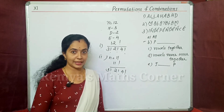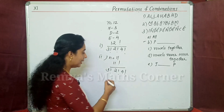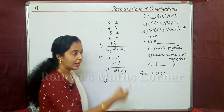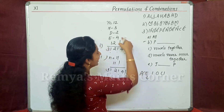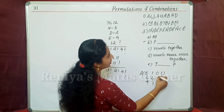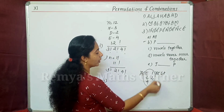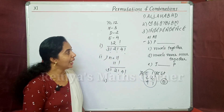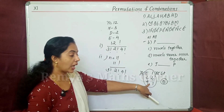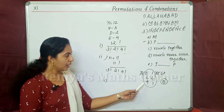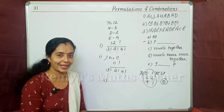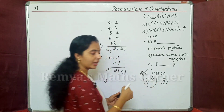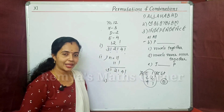Now, vowels together. We have to identify the vowels: A, E, I, O, U. We will pack the vowels in a group. We will pick one group.